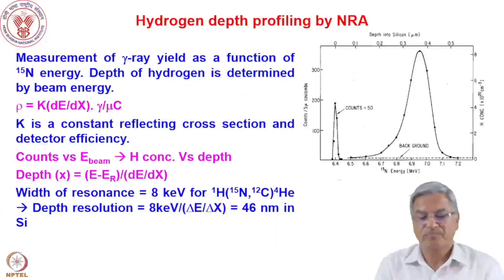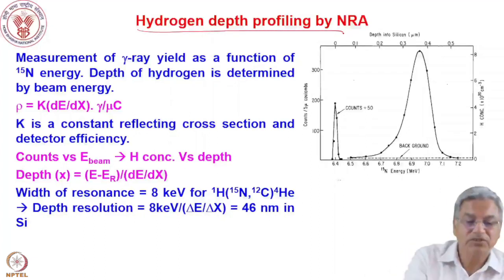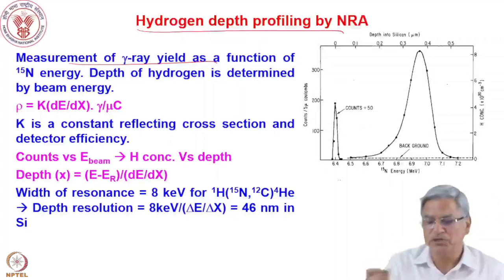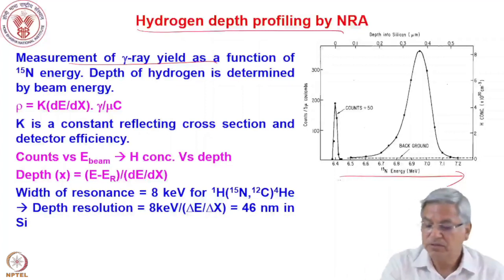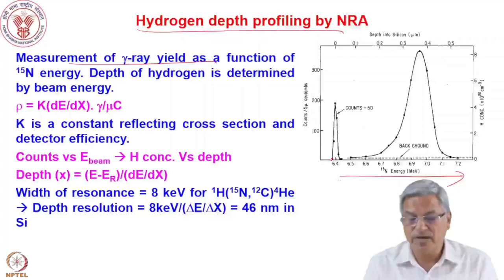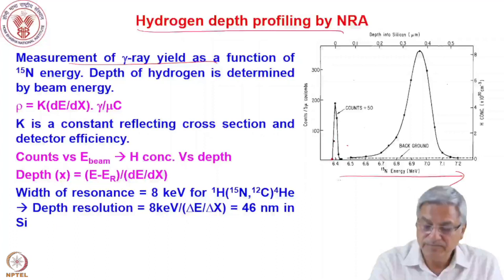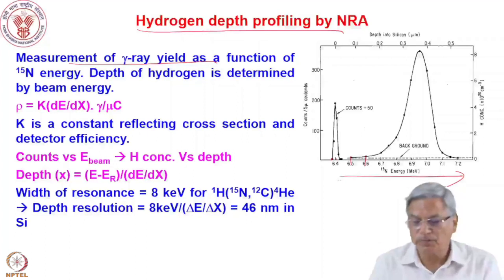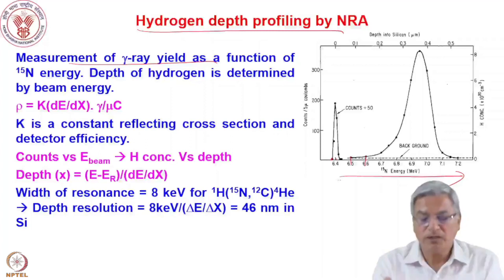This is the principle of resonant nuclear reaction or NRA. For depth profiling, you measure gamma-ray yield as a function of nitrogen-15 beam energy. The nitrogen-15 beam energy increases from around 6.35 MeV upward in steps of 20–30 keV. The experiment involves bombardment of the target; the projectile beam travels in vacuum. Multiple targets can be mounted on a rotating wheel, bringing each into the beam path in sequence.